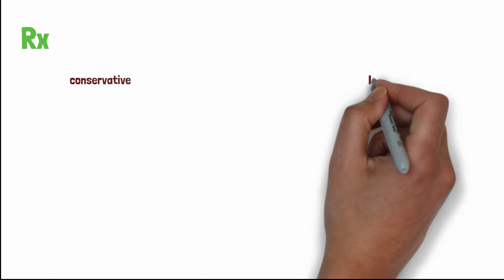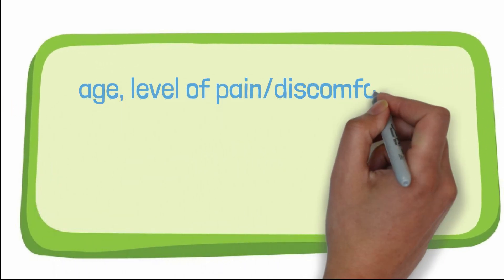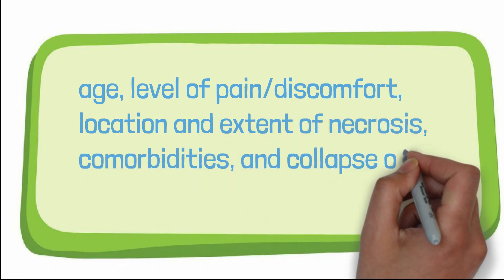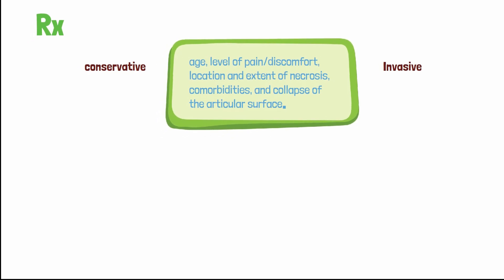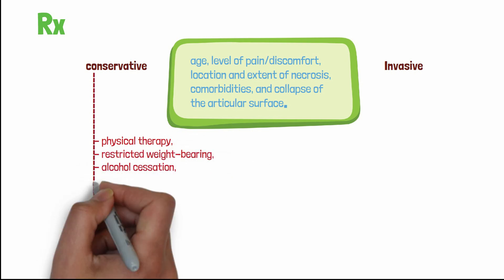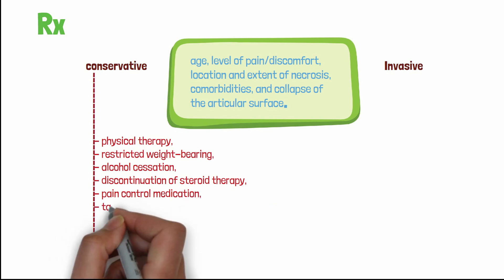The management of avascular necrosis of the femoral head ranges from conservative to invasive. The exact therapy used depends on many factors: age of the patient, level of pain or discomfort, location and extent of necrosis, comorbidities, and whether collapse of the articular surface is present. Treatment decisions should be based mainly on the presence or absence of collapse. Conservative management includes physical therapy, restricted weight bearing, alcohol cessation, discontinuation of steroid therapy if applicable, pain control medications, and targeted pharmacological therapy.